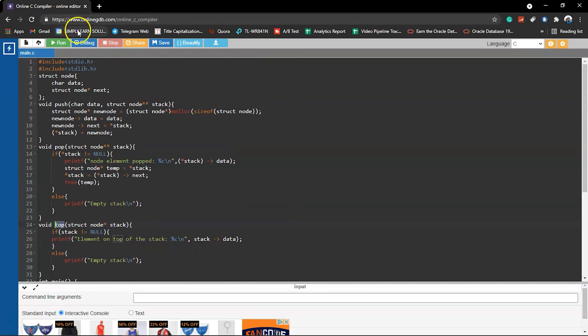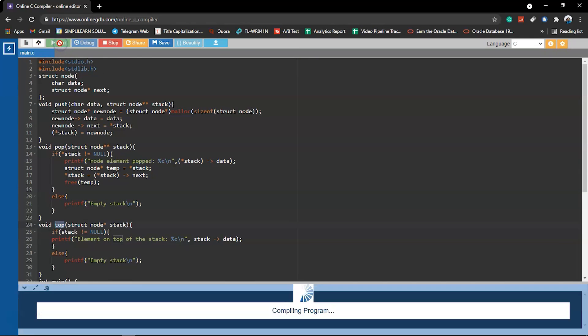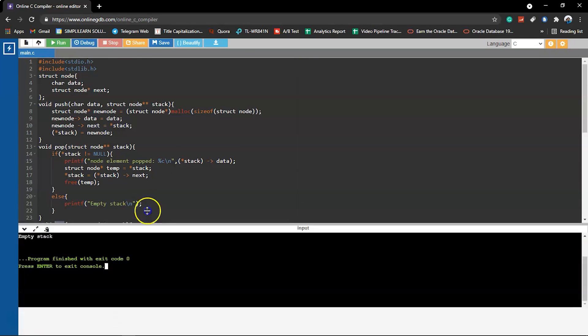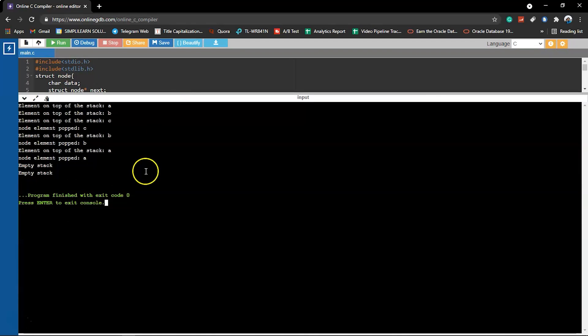Now without further ado, let's directly run the code. There you go, the code got successfully compiled and we have tried to add some elements into the stack - a, b, c - and c is being the topmost element of the stack.